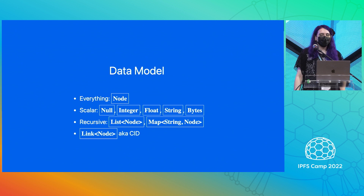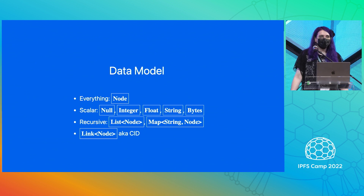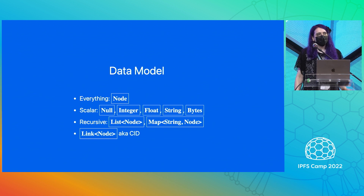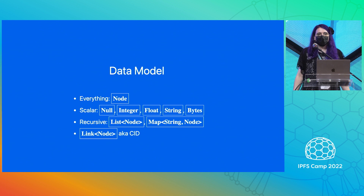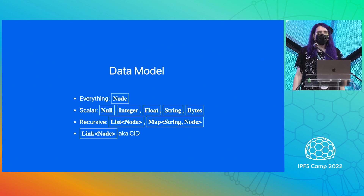At the core of everything IPLD is the IPLD data model. This is an abstract specification for the kinds of data that can be represented and exchanged in this system. Everything in the IPLD data model extends from this core type called a node, which can basically stand in for any of the other ones. There are scalar types like null, integers, floats, strings, and bytes, and there are also recursive types like lists that can contain any other node, or maps that can map a string to any other node.